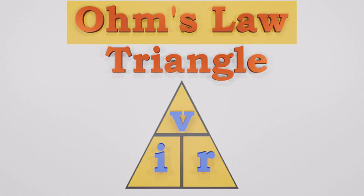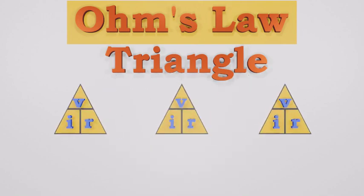Giving voltage at the top with current and resistance below. This arrangement represents the actual position of each quantity within the Ohm's Law formula. Transposing the standard Ohm's Law equation will give us the following combinations: V equals I times R, I equals V divided by R, and R equals V divided by I.